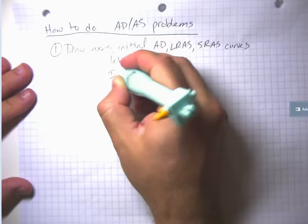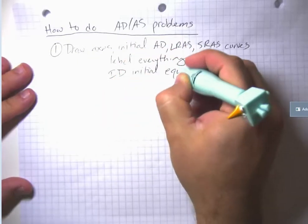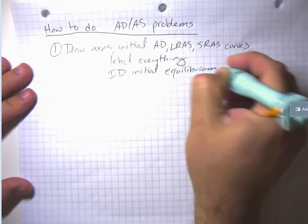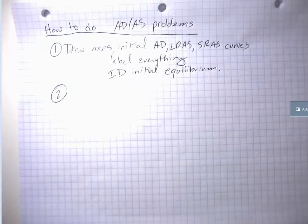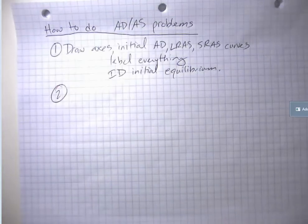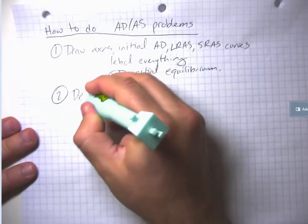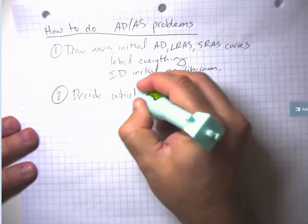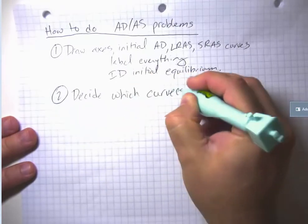Identify the initial equilibrium. The second step is typically there's going to be some kind of event that comes along, something that's going to knock us out of our equilibrium. So decide which curve or curves the event affects.